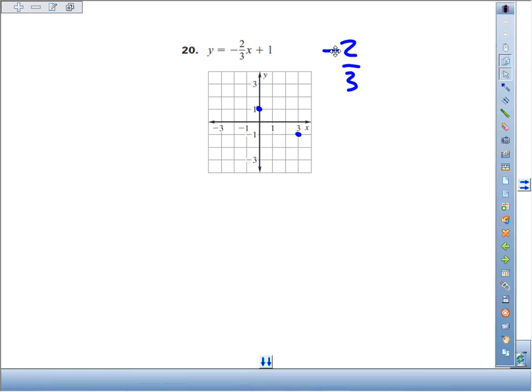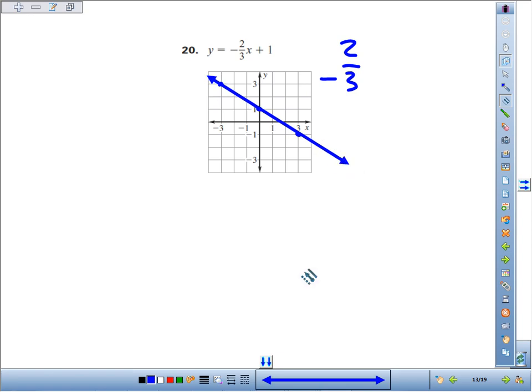If you had associated it with the three, then you would go positive two and left three. You'd move up two and left three. Either way, it creates the same line as shown.